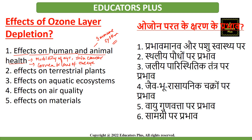For animals, direct exposure to ultraviolet radiations can also cause skin cancer and even eye cancer. If we talk about effects on terrestrial plants, the physiological and developmental processes of plants are affected by ultraviolet radiations. The photosynthesis process is also affected, which hampers the growth of plants directly or indirectly.